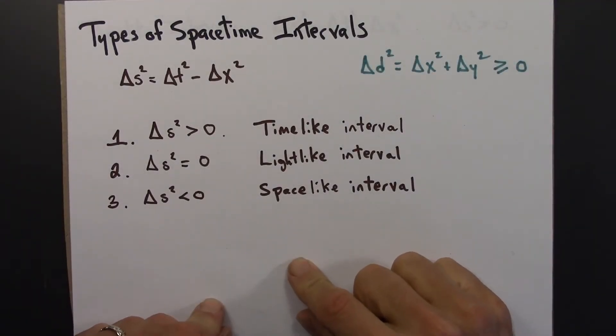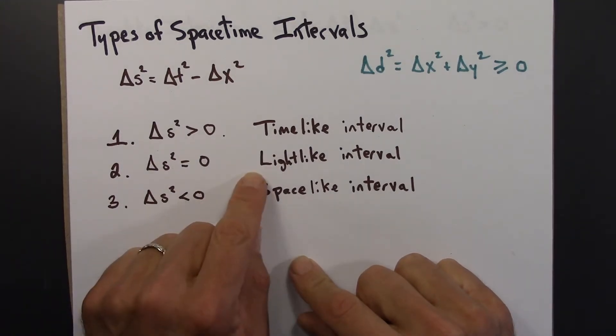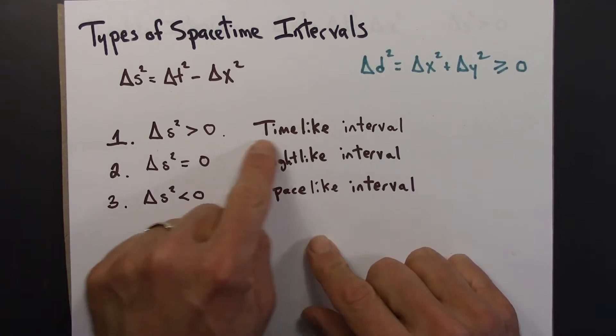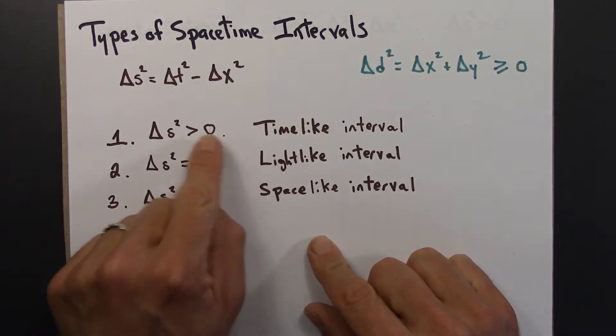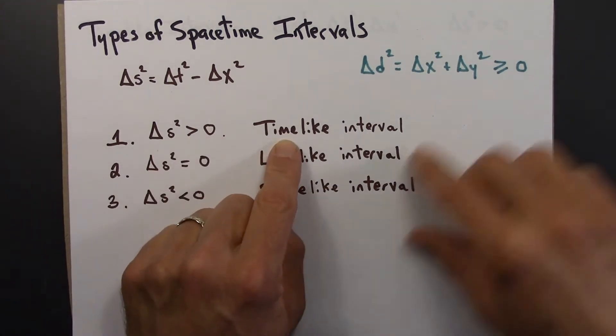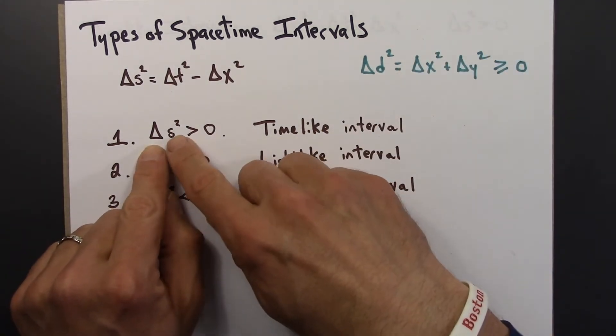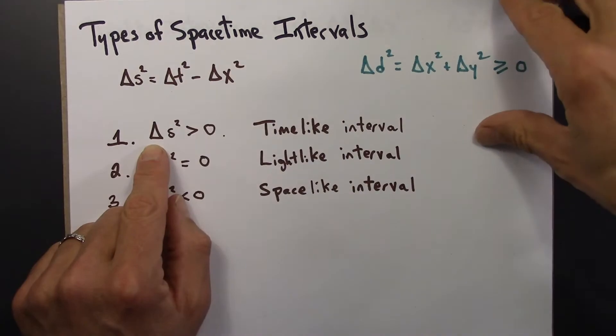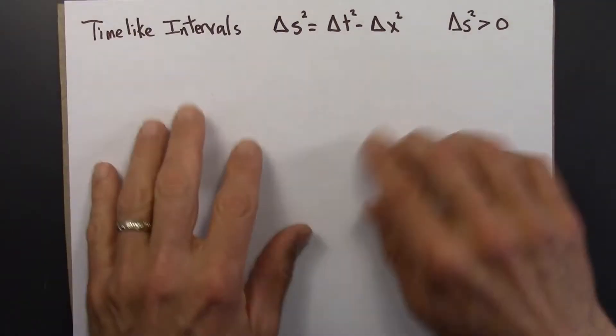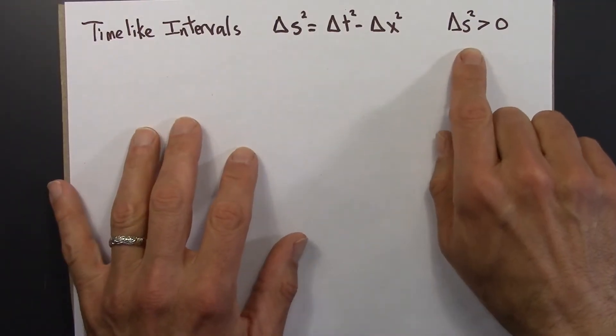There are three types of space-time intervals: time-like, light-like, and space-like. In this video, we'll look at time-like intervals and see why this corresponds to something being time-like. Time-like intervals are ones where delta s squared is greater than zero.